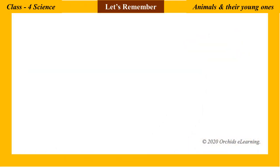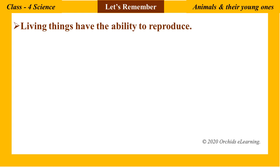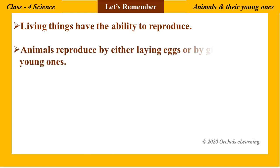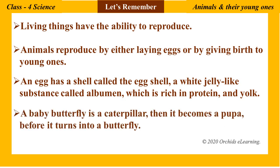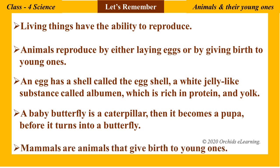Let's remember: living things have the ability to reproduce. Animals reproduce by either laying eggs or by giving birth to young ones. An egg has a shell called the eggshell, a white jelly-like substance called albumin which is rich in protein, and a yolk. A baby butterfly is a caterpillar, then it becomes a pupa before it turns into a butterfly. Mammals are animals that give birth to young ones.